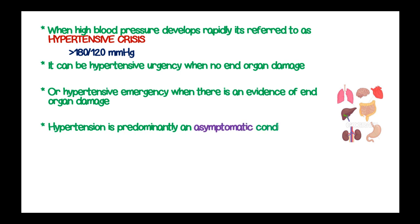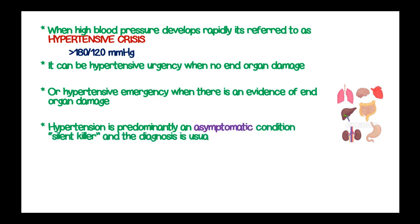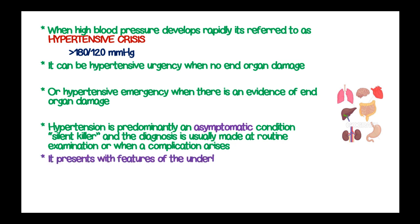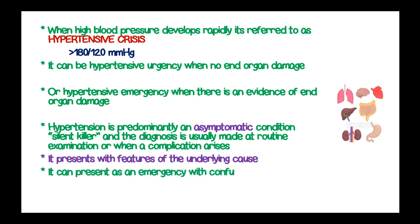Hypertension is predominantly an asymptomatic condition — that is why it is known as a silent killer — and diagnosis is usually made at routine examination or when a complication arises. It presents with features of the underlying cause. Hypertension can also present as an emergency with confusion, dizziness, chest pains, and breathlessness.